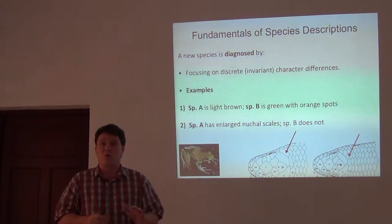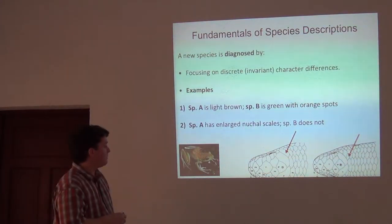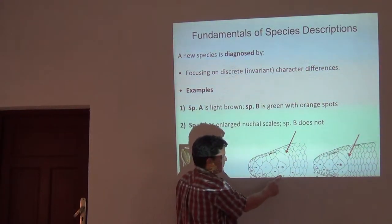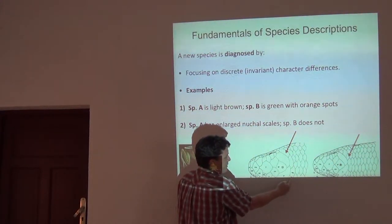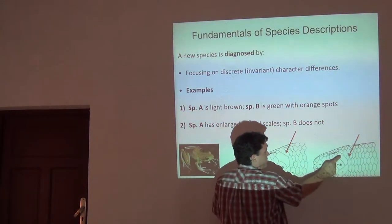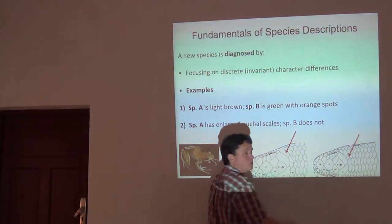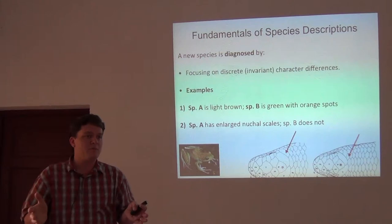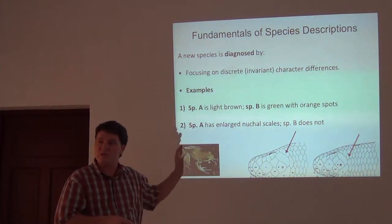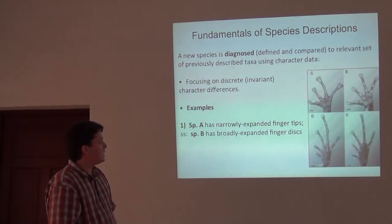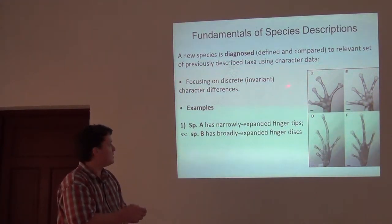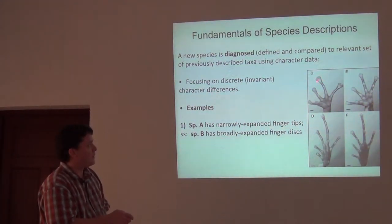Here's another example: species A has enlarged nuchal scales — the interparietal scales, parietal scales, and nuchal scales running behind the head. You can see these enlarged scales, whereas species B does not. If you assess a whole sample of populations of these lizards and show that all individuals in one population have one character state and all in the other have the opposite, that's a diagnostic character. Expansion of toe pads is another perfect example — a frog with broadly expanded toe pads and finger pads versus one that doesn't have them.